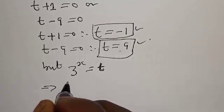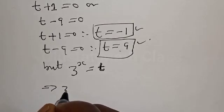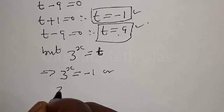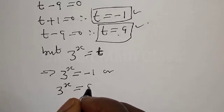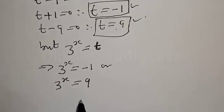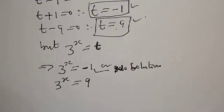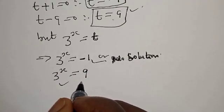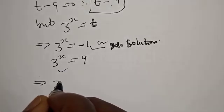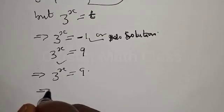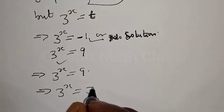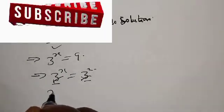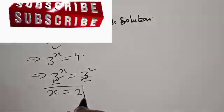But 3 raised to the power x equals T. This implies that 3 raised to the power x equals minus 1, or 3 raised to the power x equals 9. From 3 raised to the power x equal to minus 1, we conclude there is no solution. The only solution is 3 raised to the power x equal to 9, which equals 3 squared. Since they have the same base, x is equal to 2. That is our answer.